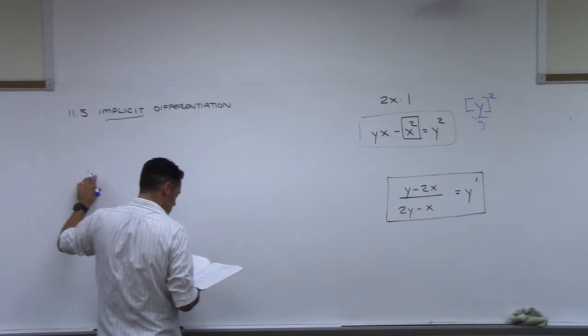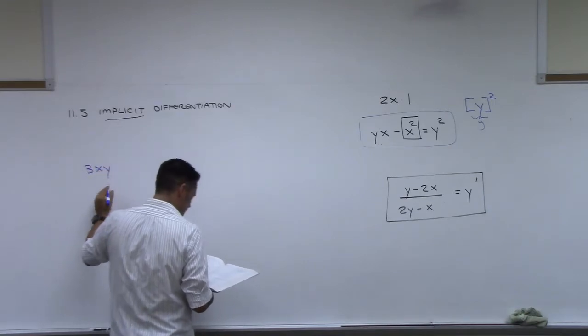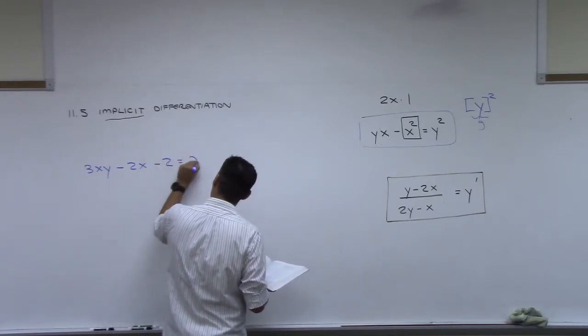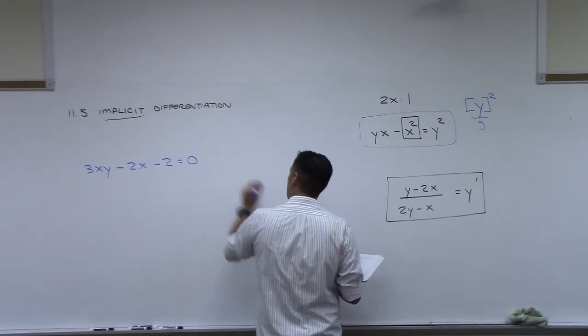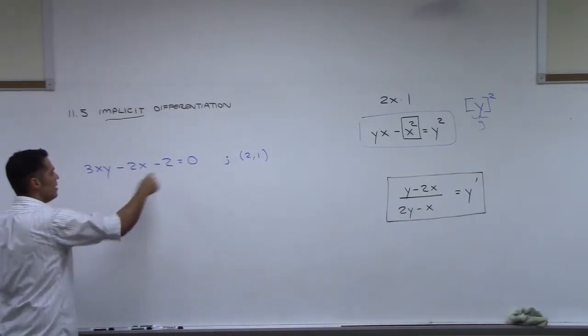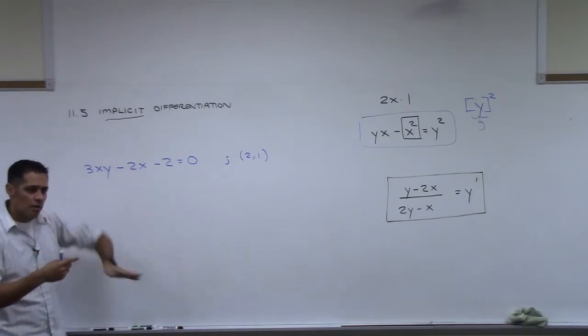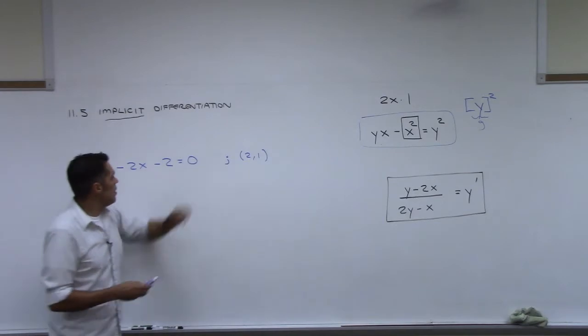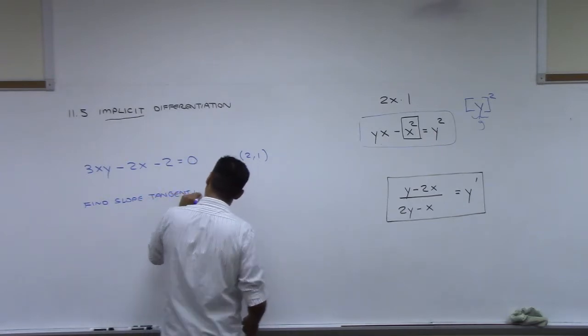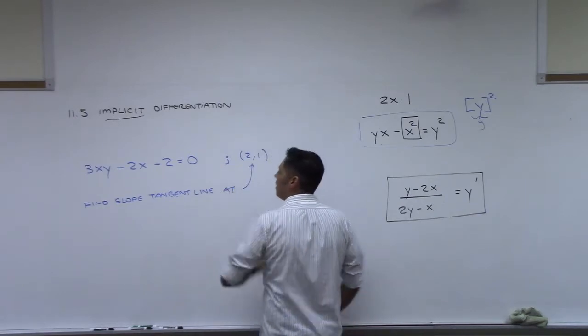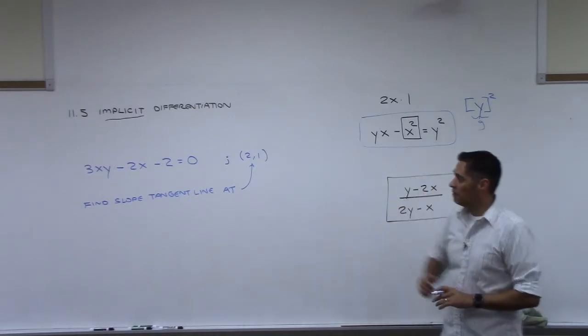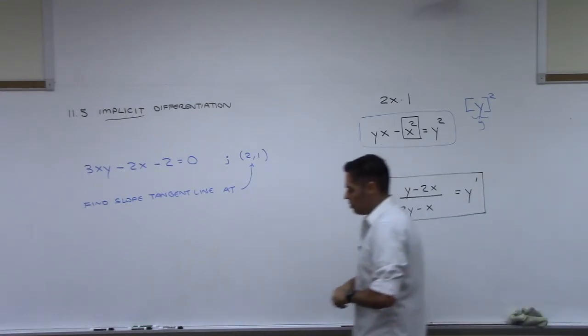How about this one? 3xy minus 2x minus 2 equals 0. And then I'm going to give you a point 2, 1. So think of it this way. This right here is some implicit equation. It's some curve in space. And I would like for us to find the slope of the tangent line at this particular point, 2, 1. So that point lives on that curve. And we're going to go try and find the slope of the tangent line there.